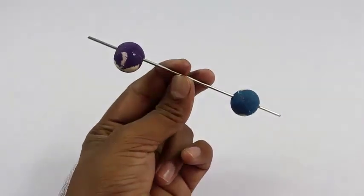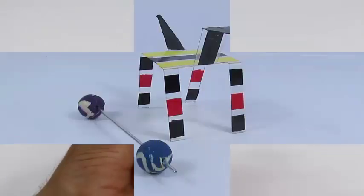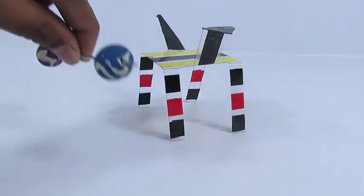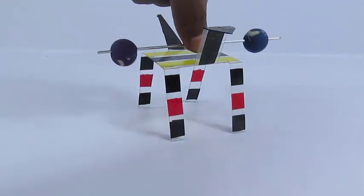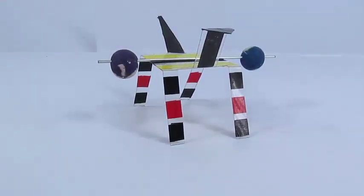Now this is a dumbbell shape. Take a bicycle spoke and put two crazy balls, and this weight you need to stick right in the middle with tape.